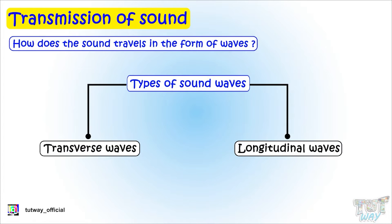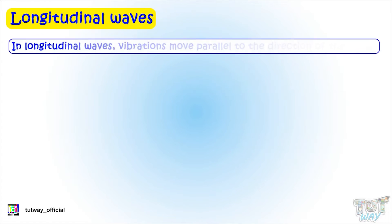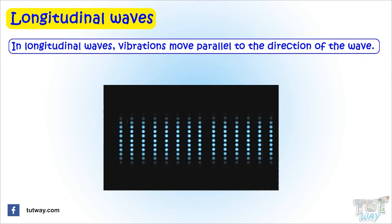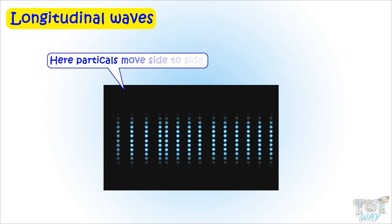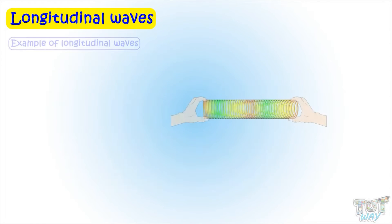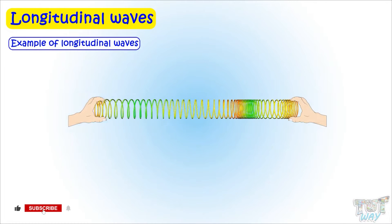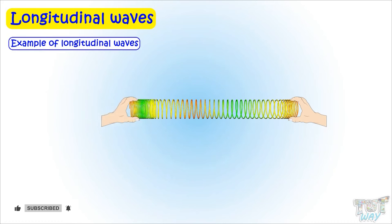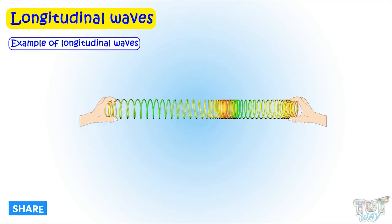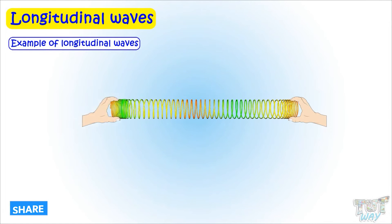In longitudinal waves, vibrations move parallel to the direction of the wave. Here, the particles move side to side. Here, you see the movement of slinky. The movement of waves in the slinky is an example of longitudinal waves.